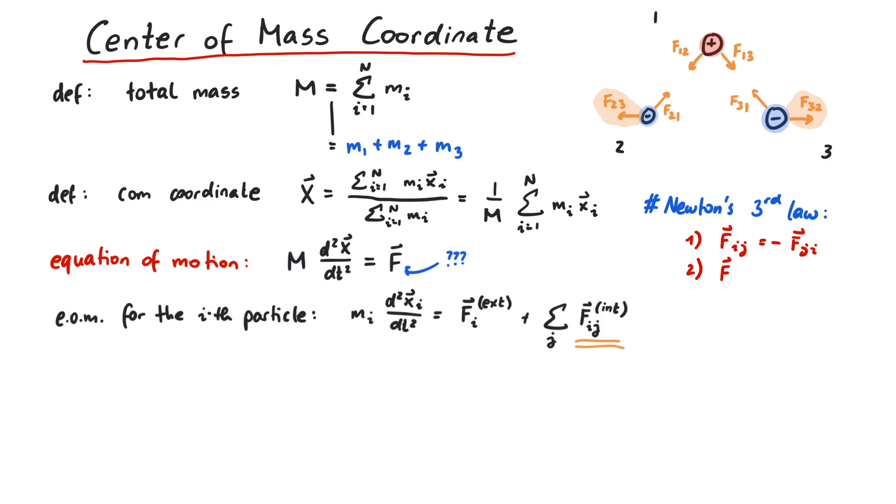And since F11 should be equal to minus F11, it's always zero. A particle does usually not apply a force on itself.